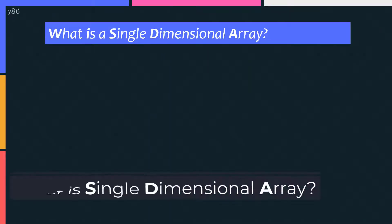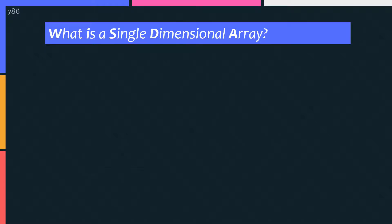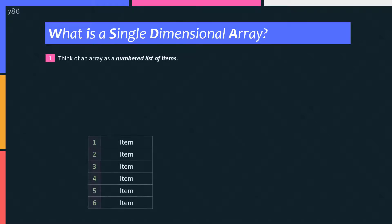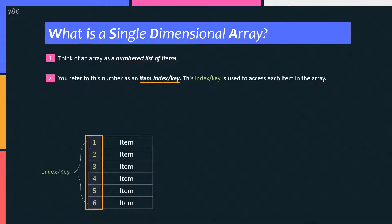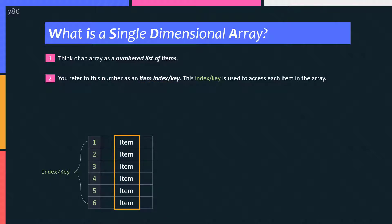So, what is a single-dimensional array? You can think of this array as a numbered list of items. This number is referred to as the item index, or you can say item key in the array. And with the help of this number index, you access each item in the array.